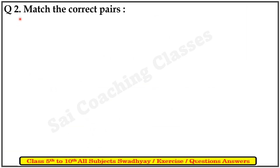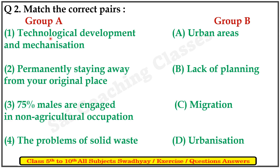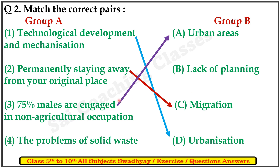Question two: match the correct pairs. Group A and Group B. First answer: urbanization. Second: migration. Third: urban areas. Fourth: lack of planning.